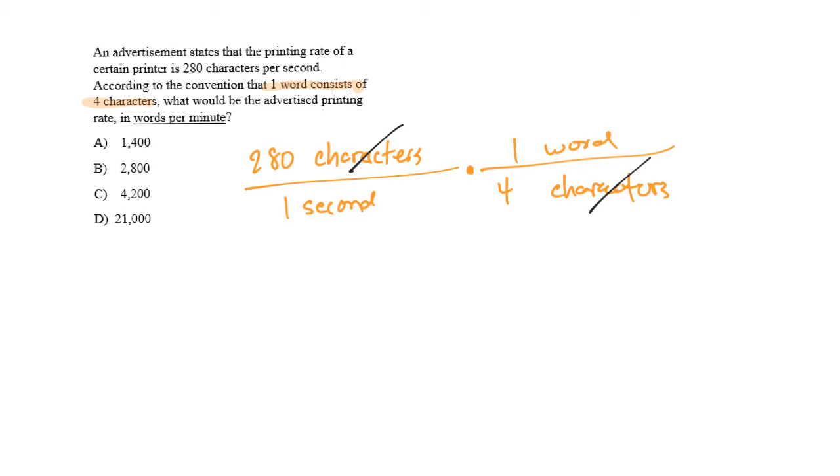Which means I'm halfway to the unit that I want of words per minute. Now I need another conversion factor which will get rid of seconds and put me into minutes. If I think about it, I know that for every 60 seconds that equals one minute.